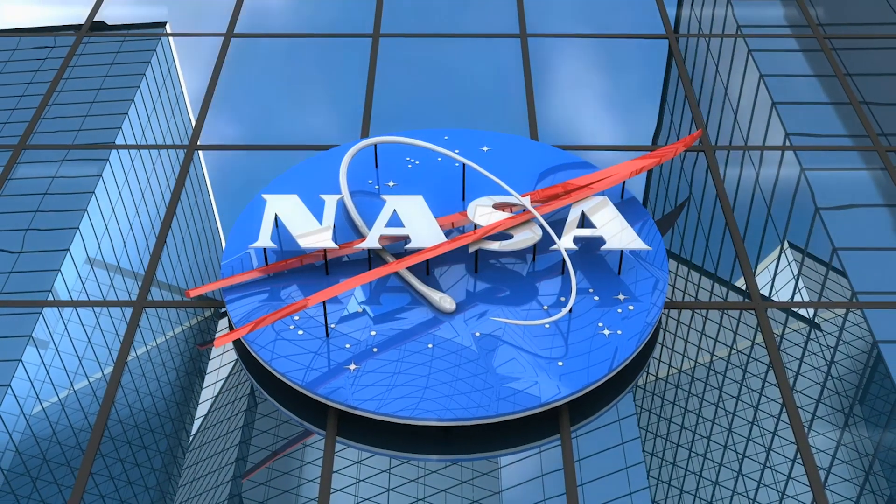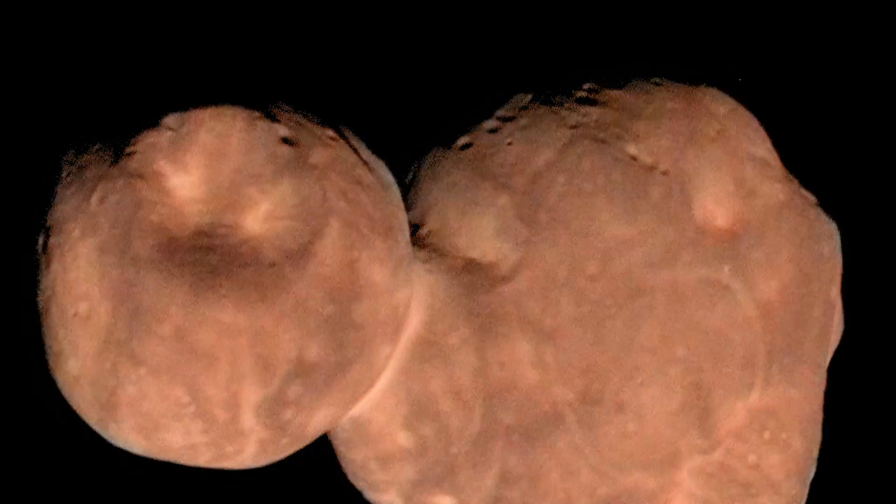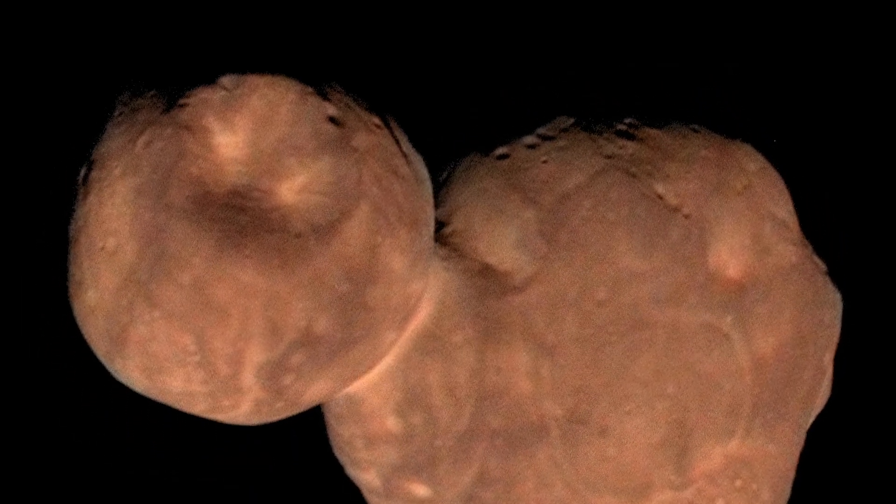NASA's New Horizons team flew by MU-69 on January 1, 2019, and managed to snap images of the object, which looks like a red, partially flattened snowman.